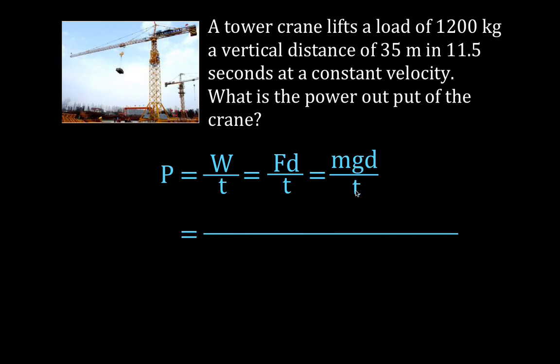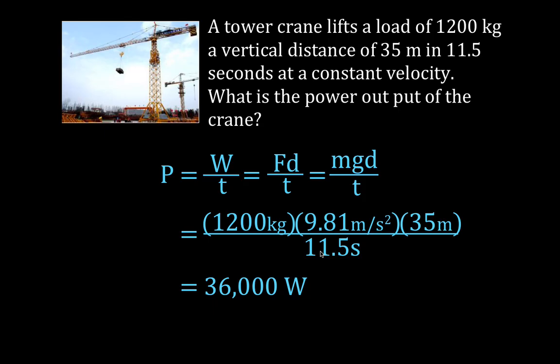We know the distance. We know the time. And now we can calculate the power output because the mass is 1,200, the acceleration due to gravity is 9.81, the distance is 35 meters, and the time it takes is 11.5 seconds. Multiply these three, divide by 11.5, and you get that the power output of that crane to do that amount of work in 11.5 seconds is approximately 36,000 watts. Now, if you want to know horsepower, you just divide this by 746 because one horsepower equals 746 watts. And you get that the power output of that crane is about 48 horsepower.